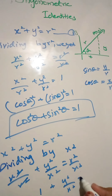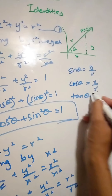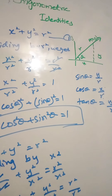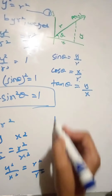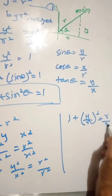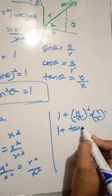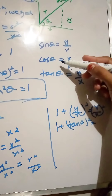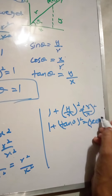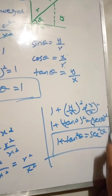This is y-squared by x-squared, and this is r-squared by x-squared. So here we have the second identity proof. y-squared by x-squared, and here we have x-squared by x-squared. x by r is cos-theta, x by x is 1, so 1 plus tan-squared theta equals sec-squared theta. So we have the second identity proof.